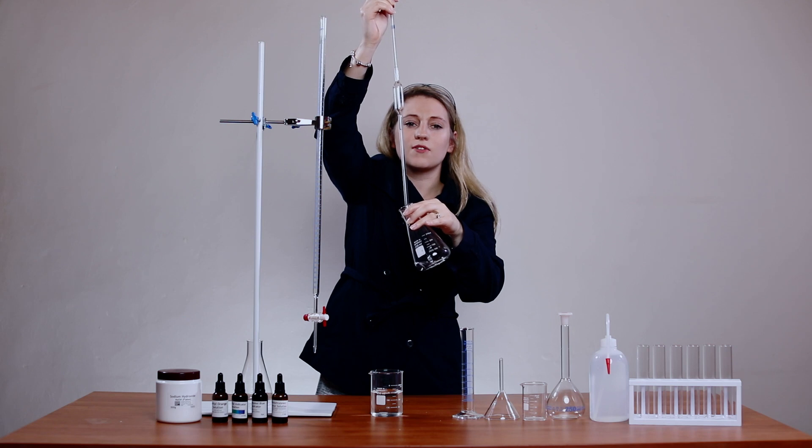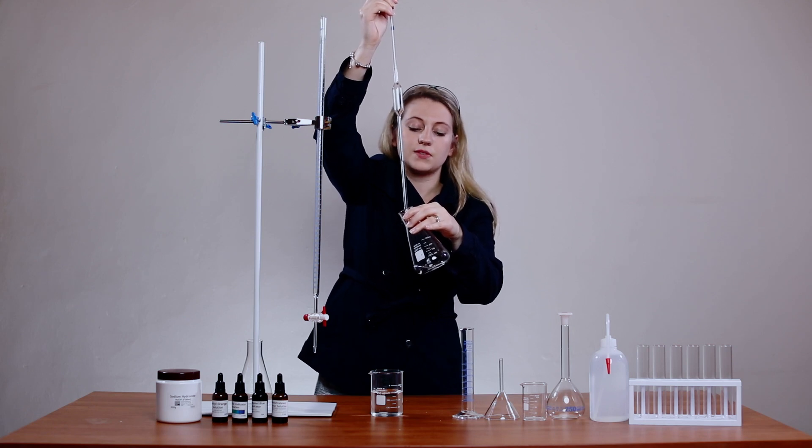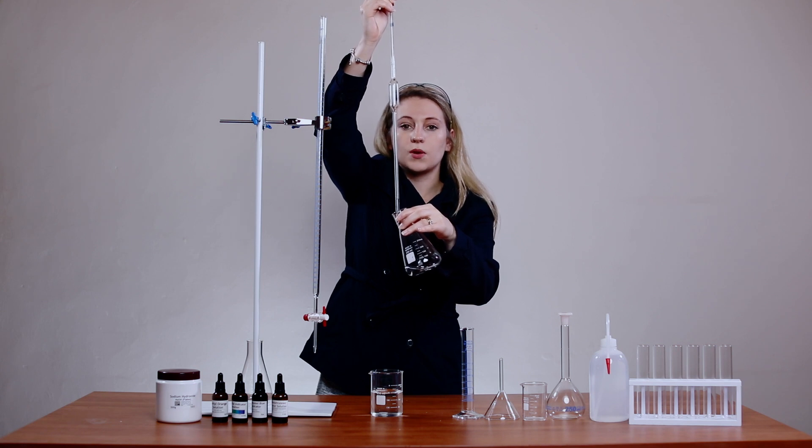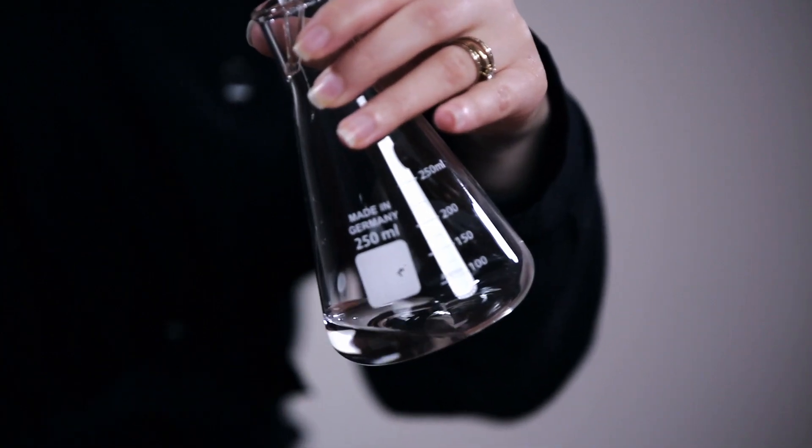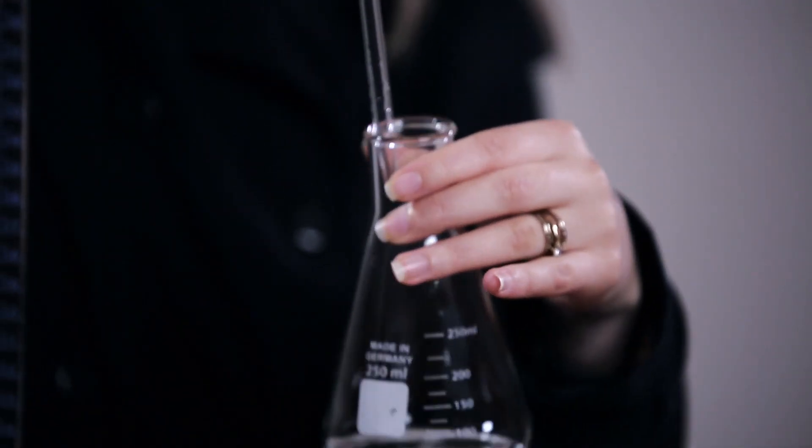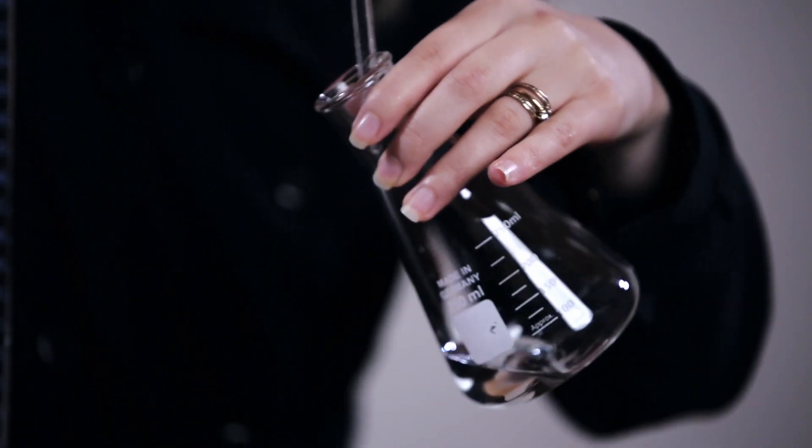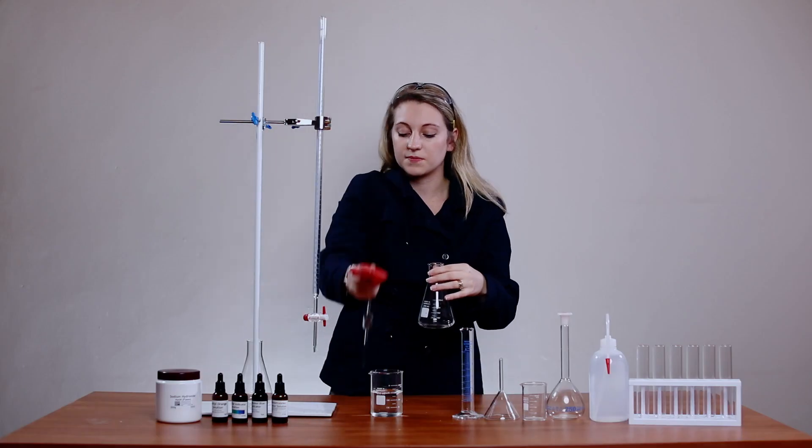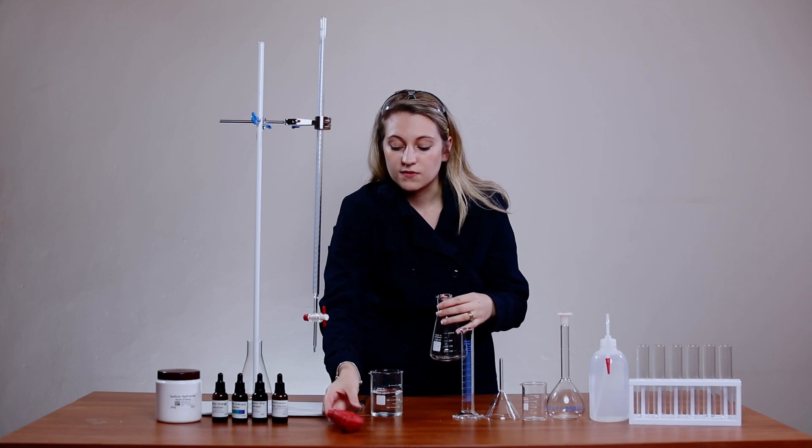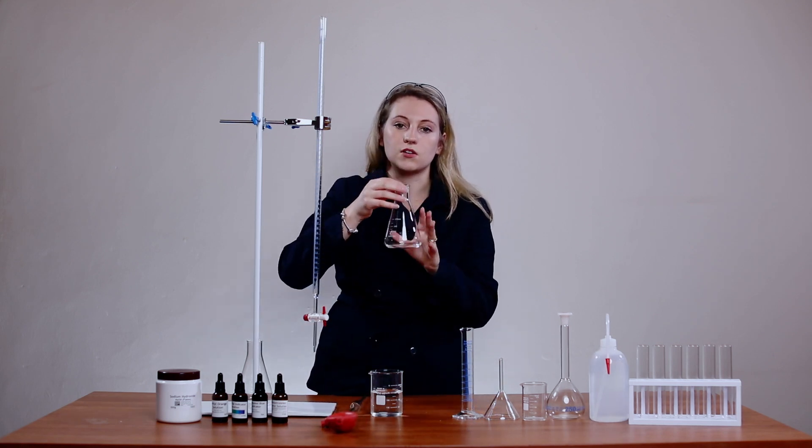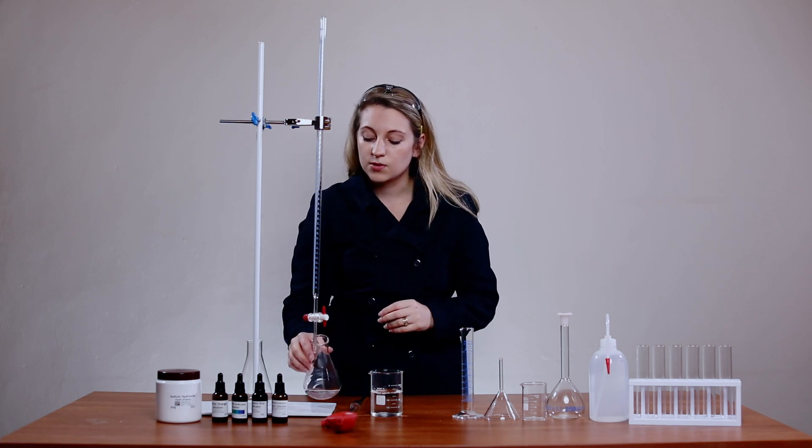You could have used the 25 cubic centimeter measuring cylinder, but when we do titrations we work with the most accurate equipment and that is your burette and your pipette. You just make that last little tilt to make sure that last drop goes into your Erlenmeyer flask. Now you have 25 milliliters of solution in your Erlenmeyer flask which you will place underneath your burette.